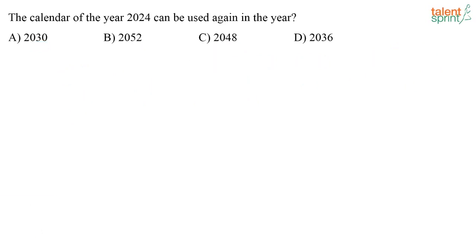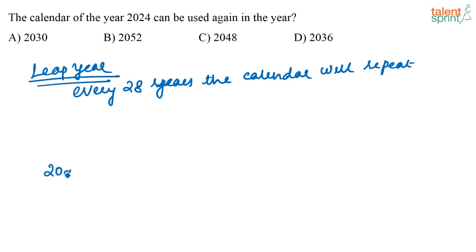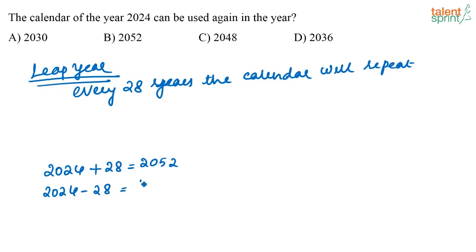When you have such questions, there is a small shortcut that you can remember. For leap years, every 28 years the calendar will repeat. If the given year is a leap year, then every 28 years the calendar will repeat. So 2024 plus 28, that is 2052, will definitely have the same calendar. Similarly, 2024 minus 28, that is 1996, will also have the same calendar.